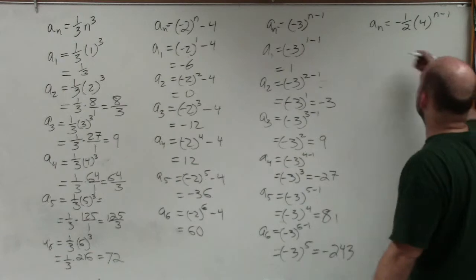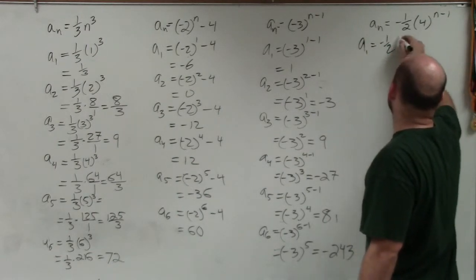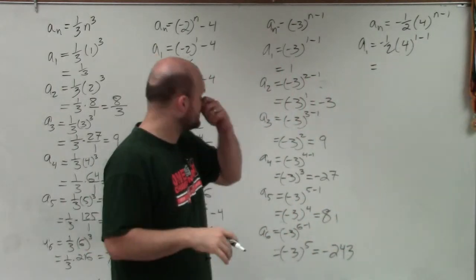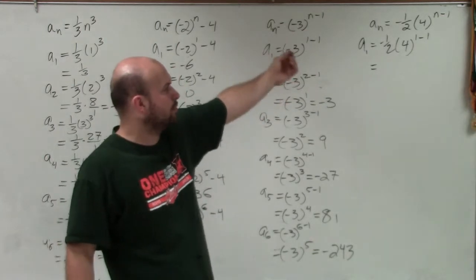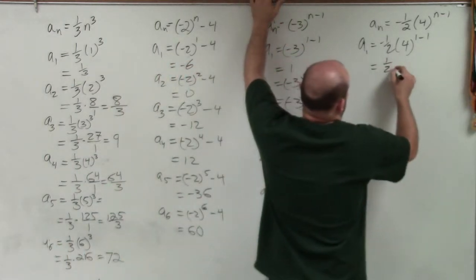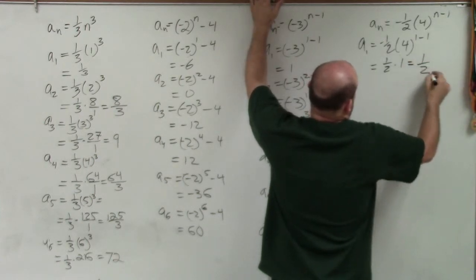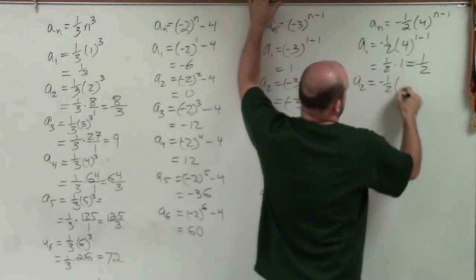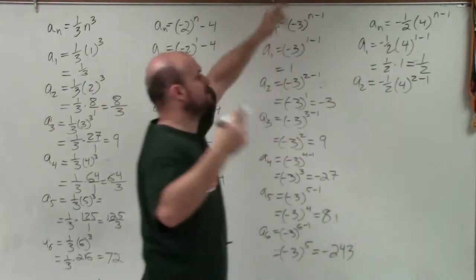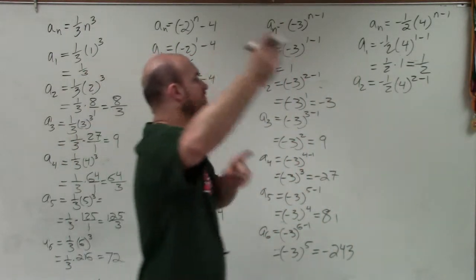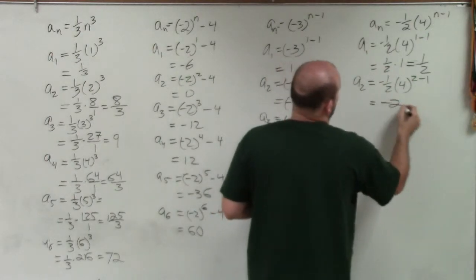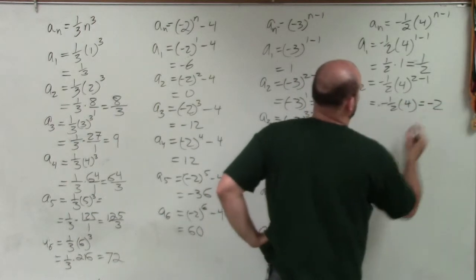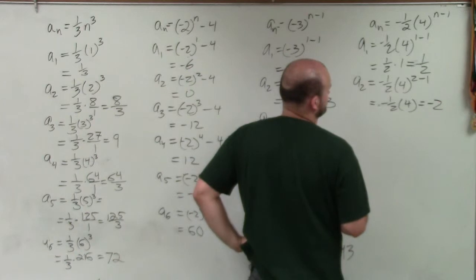Now let's do the last one. A sub 1 equals negative 1 half times 4 to the power of 1 minus 1. 1 minus 1 is 0, and 4 to the 0 is 1. 1 times negative 1 half is negative 1 half. A sub 2 is negative 1 half times 4 raised to the 2 minus 1. 2 minus 1 is 1, and 4 to the first power is 4. 4 times negative 1 half is negative 2.